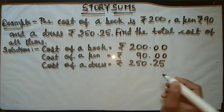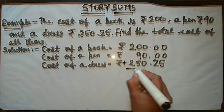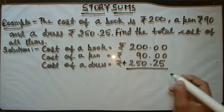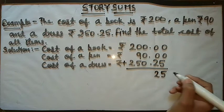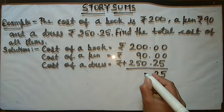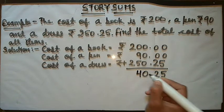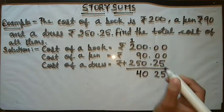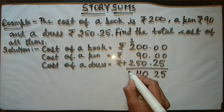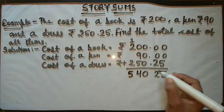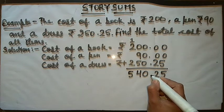Now we will add them. 0 plus 0 is 0. 0 plus 9 plus 5 is 14. We write 4 and 1 here will be carry. Now 1 plus 2 is 3, 3 plus 2 is 5. And point here after 2 digits, so we also put point after 2 digits only.